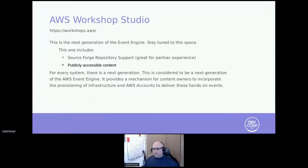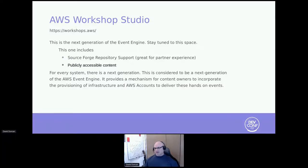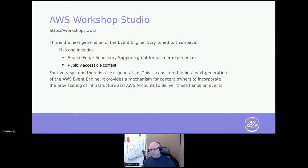All of the workshops being created now are being done in this 2.0 version. All of the things I'm saying are probably going to evolve — there's a next generation and this is it. This version provides source forge support and makes it possible for us to have publicly available accessible content for the whole AWS experience. That's something I'm super excited about, and why we're here today — this will be more publicly accessible.